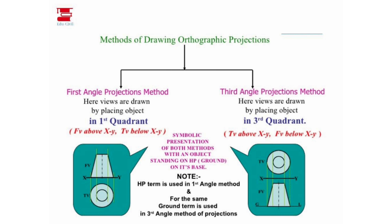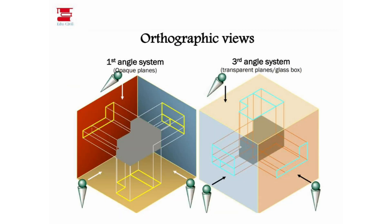Looking at the figure: the left side shows the first angle system — shown in red — with the vertical plane and horizontal plane, with the profile plane as an axis. The right side shows the third angle system. In the first angle, we observe the plane, then the object. In the third angle, we observe the plane and the object in a different arrangement.